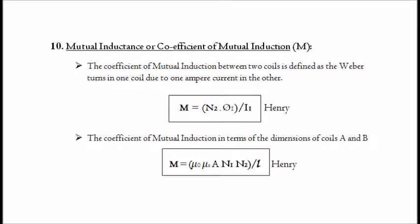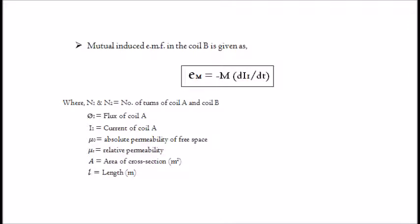10. Mutual inductance or coefficient of mutual induction, M. The coefficient of mutual induction between two coils is defined as the weber-turns in one coil due to one ampere current in the other. It is given by: M equals N2·φ1 divided by I1. The coefficient of mutual induction in terms of the dimensions of coils A and B: M equals μ₀·μᵣ·A·N1·N2 divided by l. Mutual induced EMF in coil B is given as: eM equals minus M · dI1/dt, where N1 and N2 are the number of turns of coil A and coil B, φ1 is the flux of coil A, I1 is the current of coil A, μ₀ is the absolute permeability of free space, μᵣ is the relative permeability, A is the area of cross-section in meter squared, and l is the length in meters.